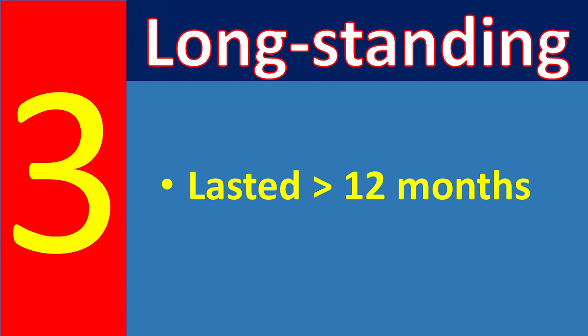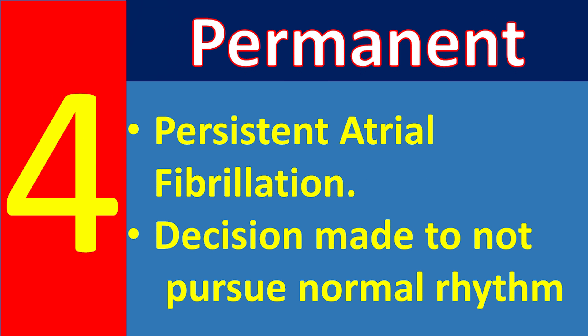Long-standing persistent atrial fibrillation refers to atrial fibrillation that has lasted for more than 12 months. Permanent atrial fibrillation refers to persistent atrial fibrillation for which a joint decision by the patient and clinician has been made to no longer pursue a rhythm control strategy. While atrial fibrillation typically progresses from paroxysmal to persistent status, patients can present with both types throughout their lives.